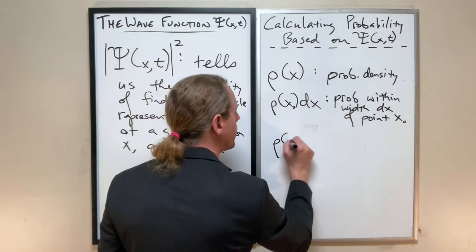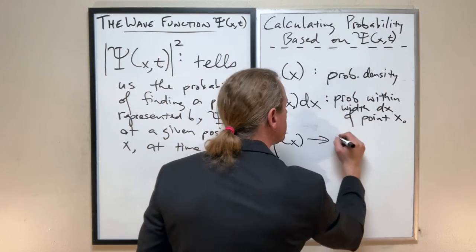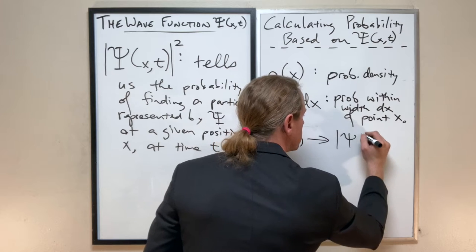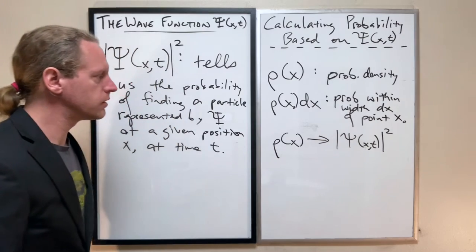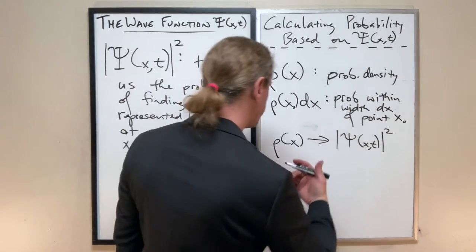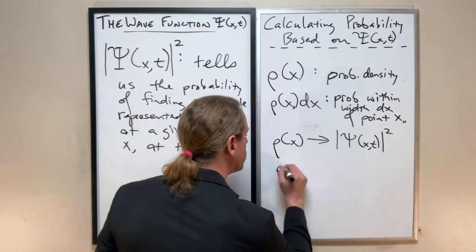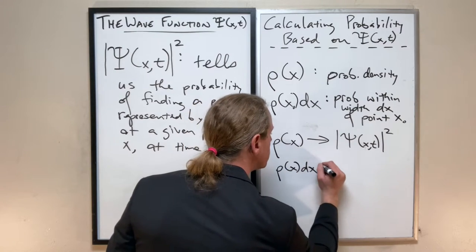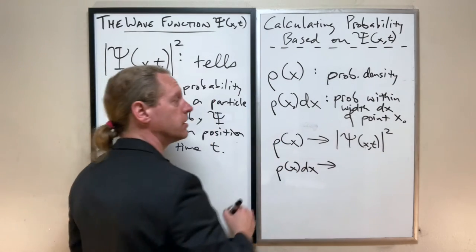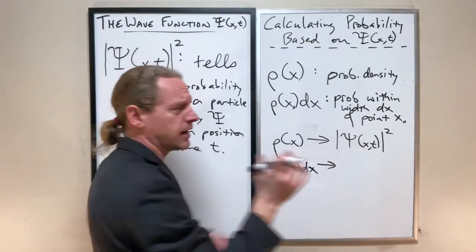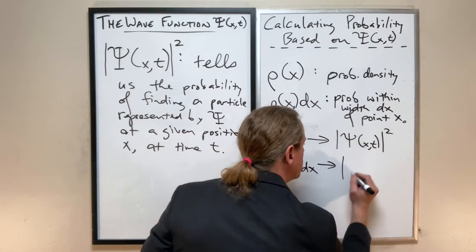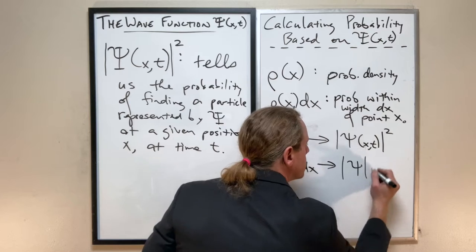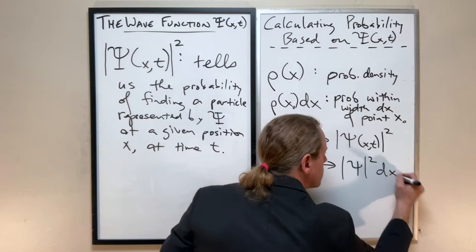So rho of x now simply becomes that psi of x and t squared. And that tells us as well that rho of x dx will simply get turned into,